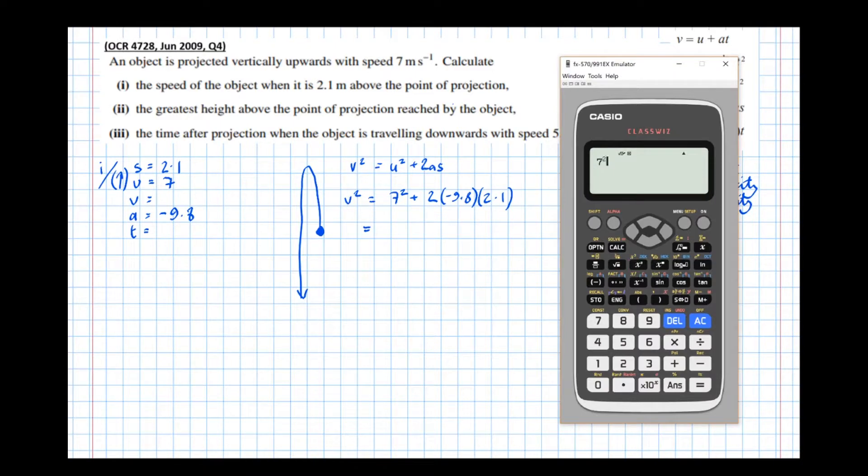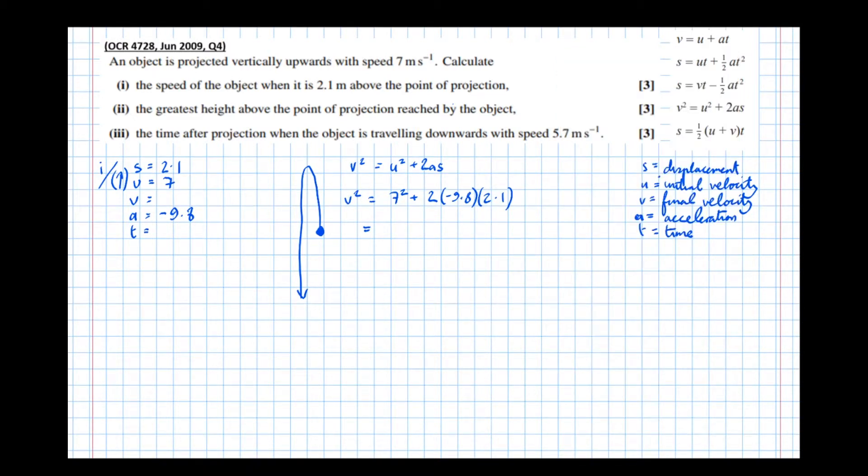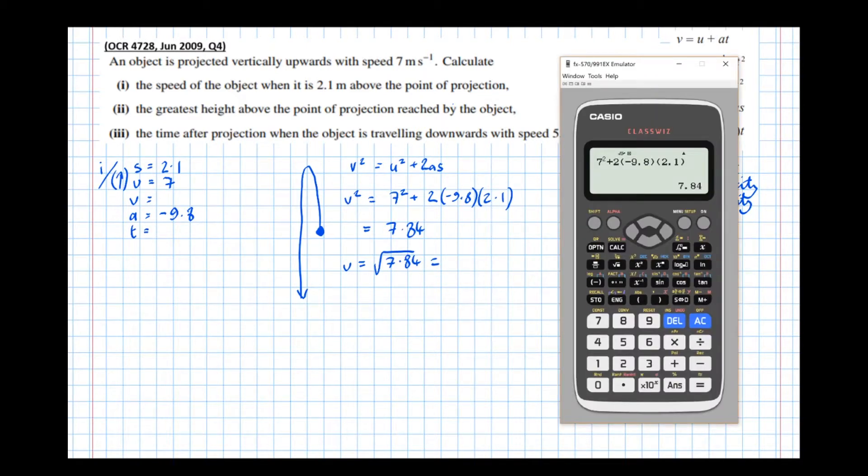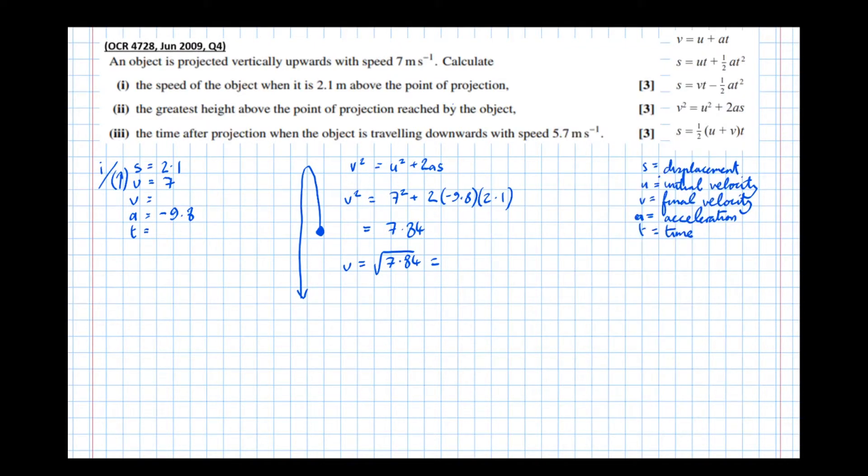V squared equals, okay, so 7 squared plus 2 minus 9.8 times 2.1 equals 196 over 25, or 7.84. So then, that means v equals the square root of 7.84 equals, so the square root of that equals 14 over 5, or 2.8 meters per second.